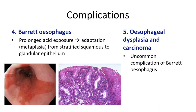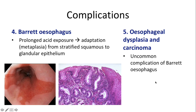Complication number four is Barrett's esophagus, which results from prolonged acid exposure. The normal esophageal lining of stratified squamous epithelium is not made to withstand acid, so with prolonged acid exposure there is metaplasia from stratified squamous to glandular epithelium to withstand acid better. The fifth complication is the development of esophageal dysplasia and carcinoma as a consequence of Barrett's esophagus, though this is uncommon and will be discussed in the lecture on esophageal neoplasms.